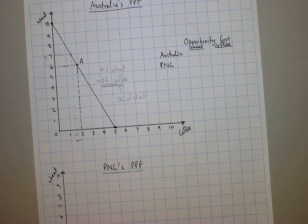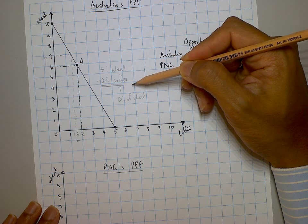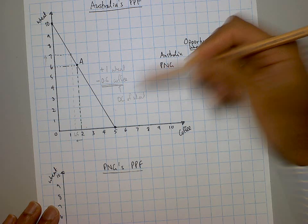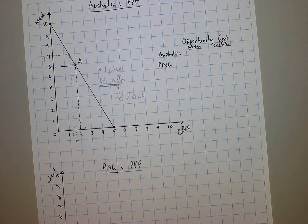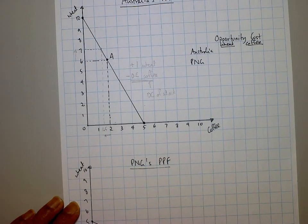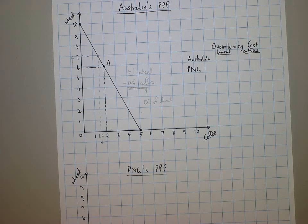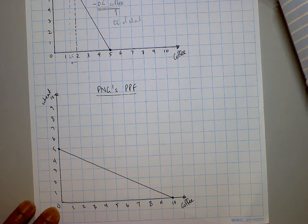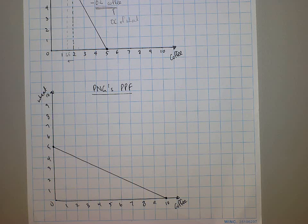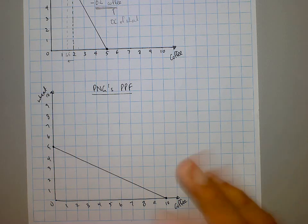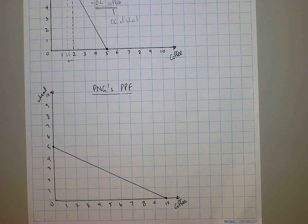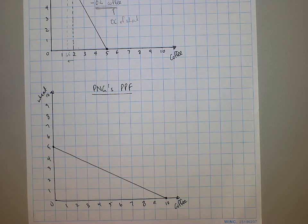That's how you understand opportunity cost using a graph. Now calculate the opportunity cost of wheat for PNG using the same method. An increase in production of wheat by one for PNG will require giving up two units of coffee.